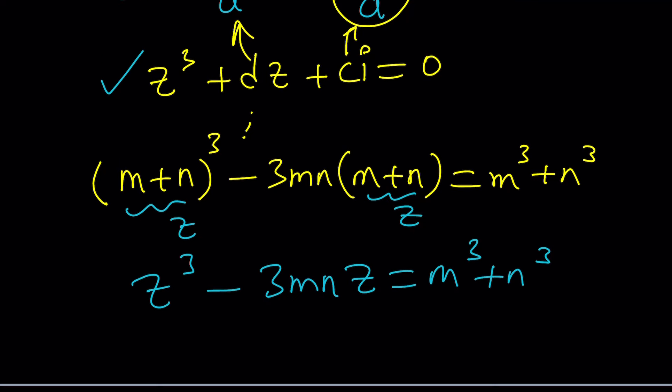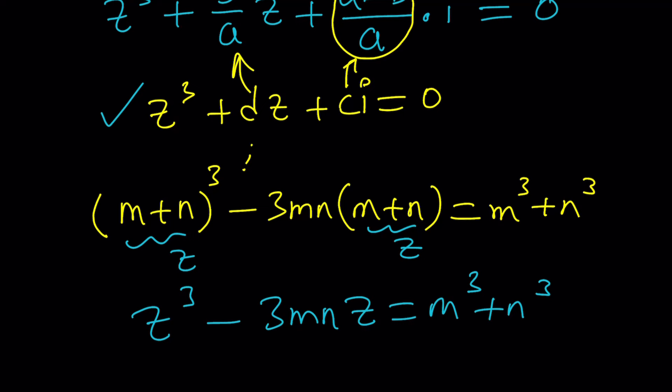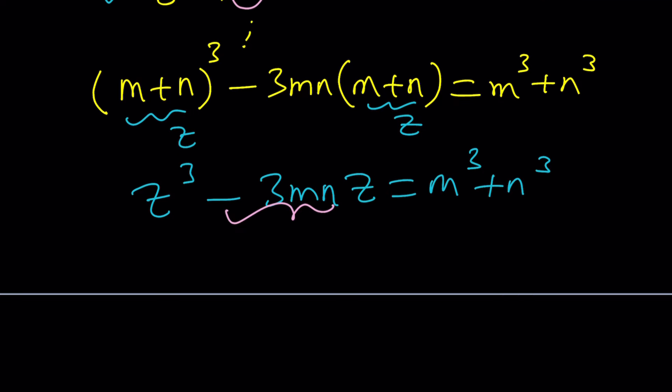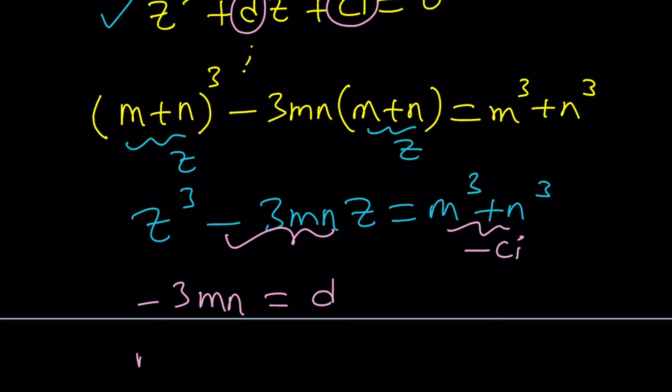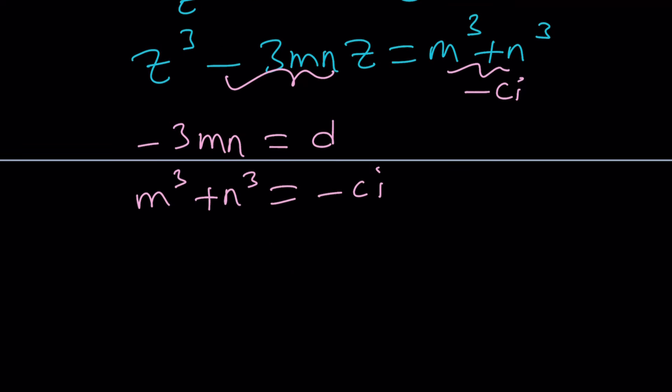I'm not going to finish this up because that's going to take a while. And you can definitely do this on your own. I'm curious about the results. Please let us know. But from here, by comparing the coefficients like coefficient of Z here and here, it's safe to say that negative 3MN is going to equal D. And M cubed plus N cubed is just going to equal negative CI. So I can write down my system like this and then do a little bit of algebra here or arithmetic.